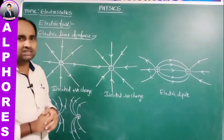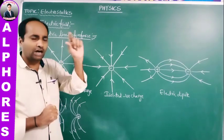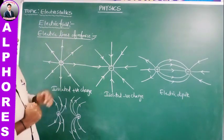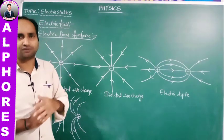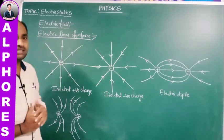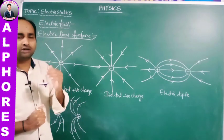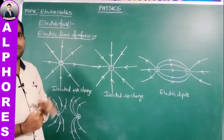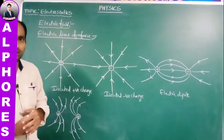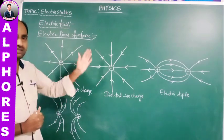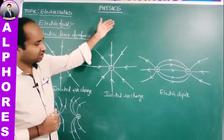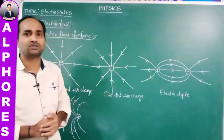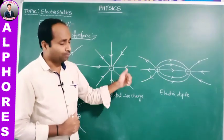To summarize: electric field is the region around the charged particle up to which its influence is felt, or in which an electric charge can experience the electrostatic force. Electric lines of force is the path followed by the unit positive charged particle in an electric field. For isolated positive charges, lines start at the charge and end at infinite distance. For isolated negative charges, they start far away and end at the charge. For a dipole, they go from positive to negative. Electric lines of force are open curves, unlike magnetic lines of force which are closed curves.